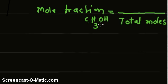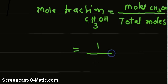So mole fraction of methanol equals moles of methanol in the mixture divided by total number of moles. That equals 1 divided by total number of moles, that is moles of methanol plus moles of ethanol, which equals 2.